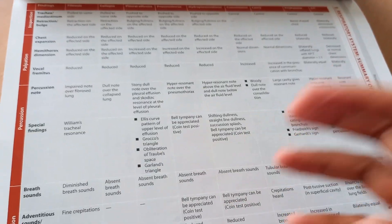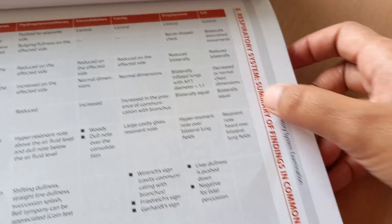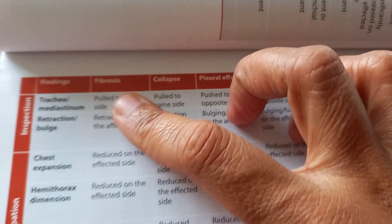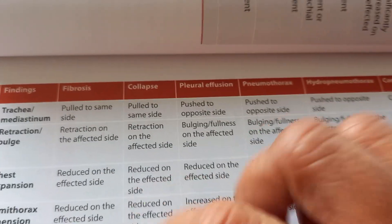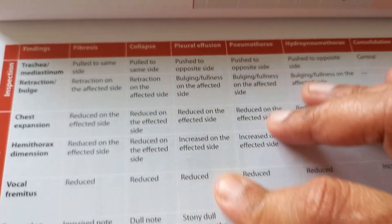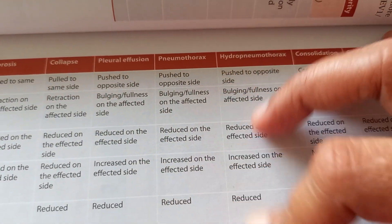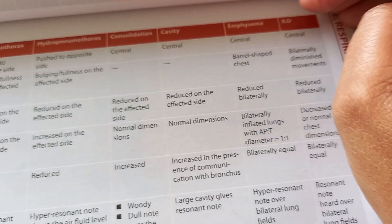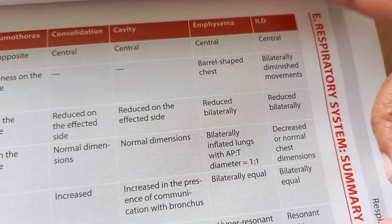I wanted to show you this table — 'Respiratory System: Summary of Findings in Common Respiratory Diseases.' Fibrosis, collapse, pleural effusion, pneumothorax, hydro-pneumothorax, consolidation, cavity, emphysema, and ILD — what findings you will have for each. I think this is a very nice chart.